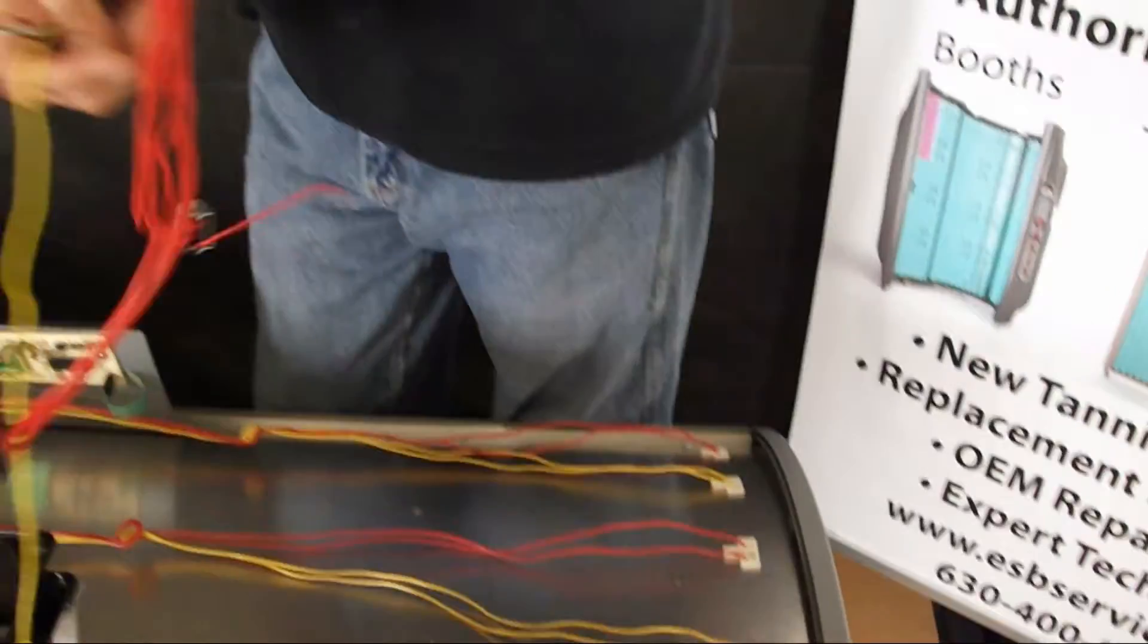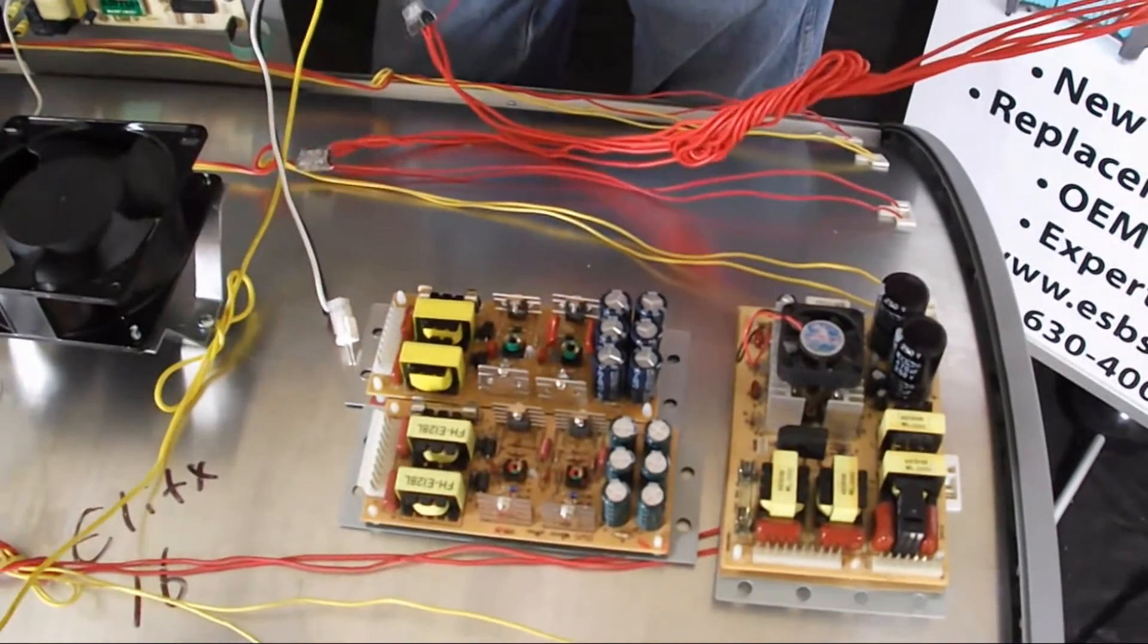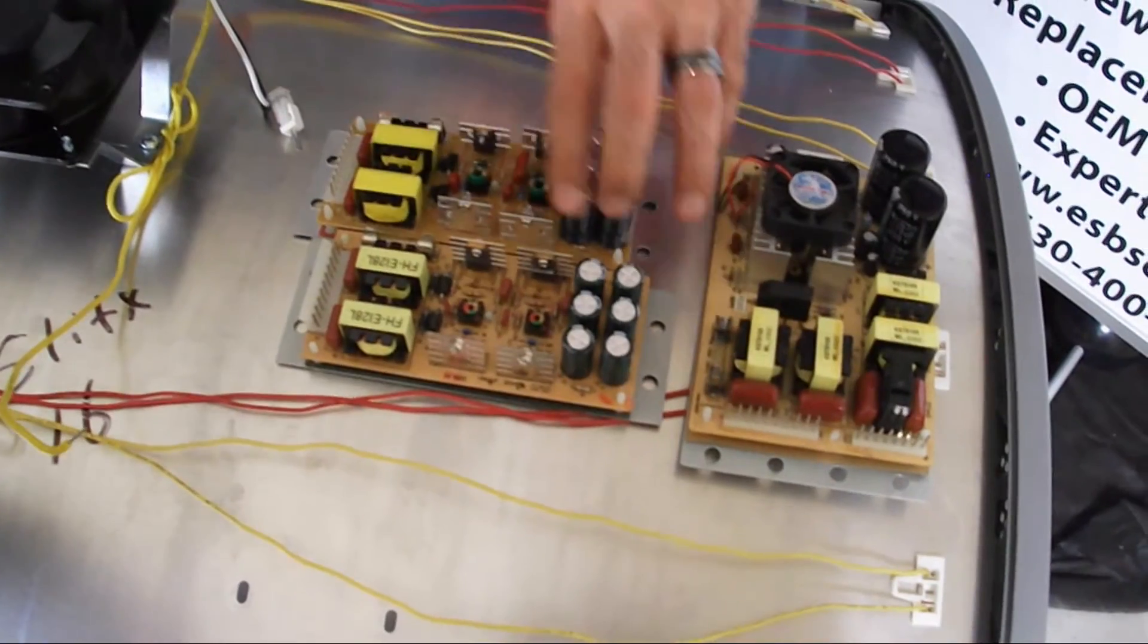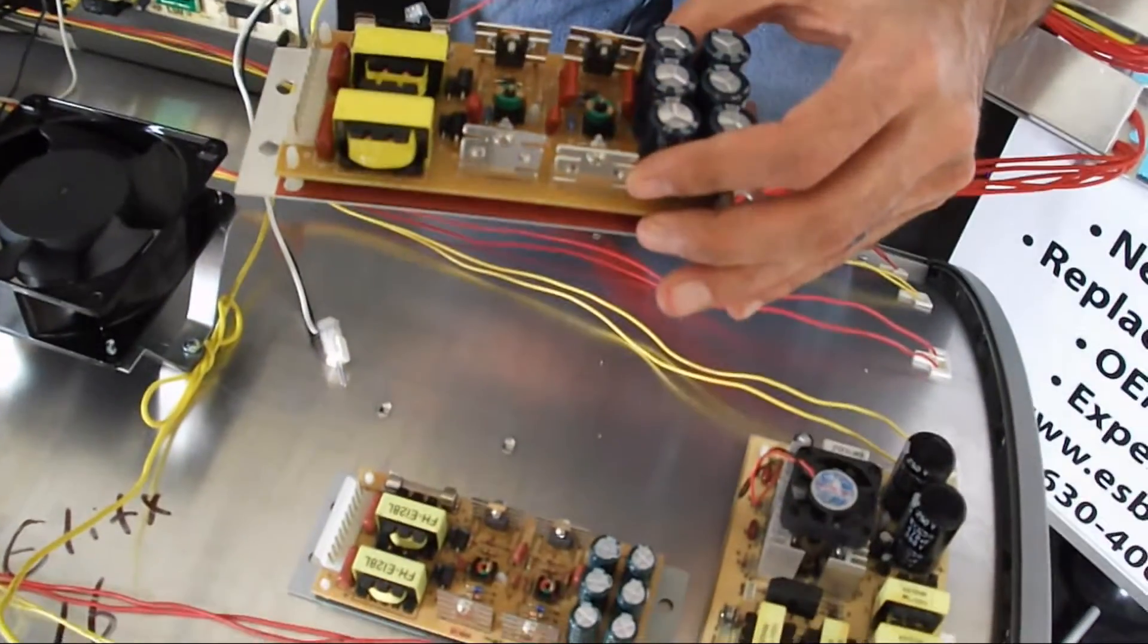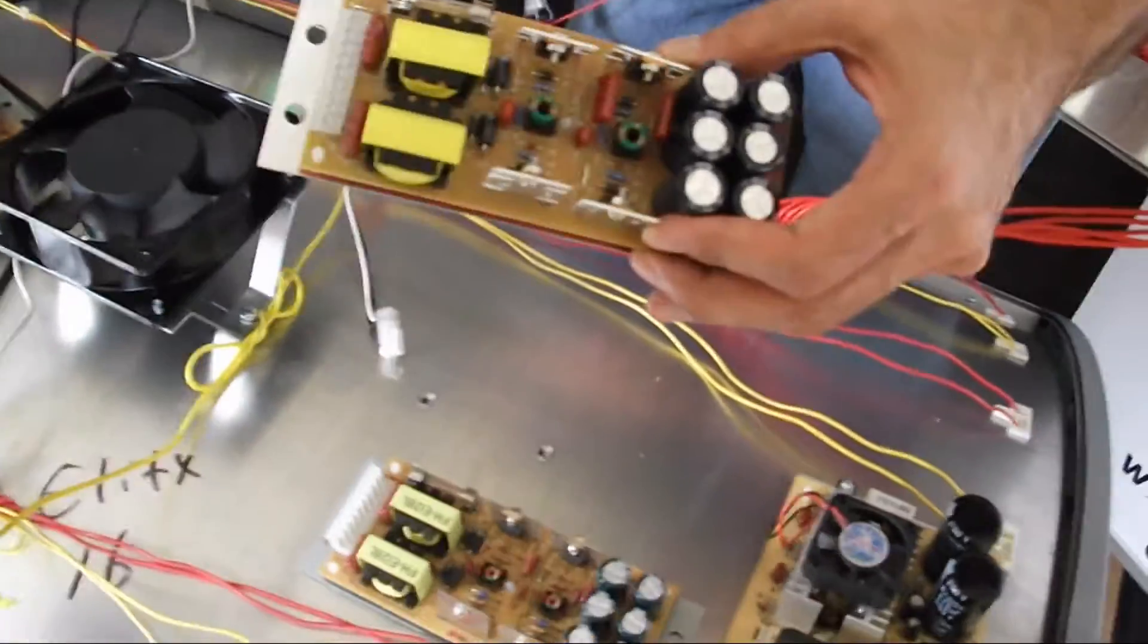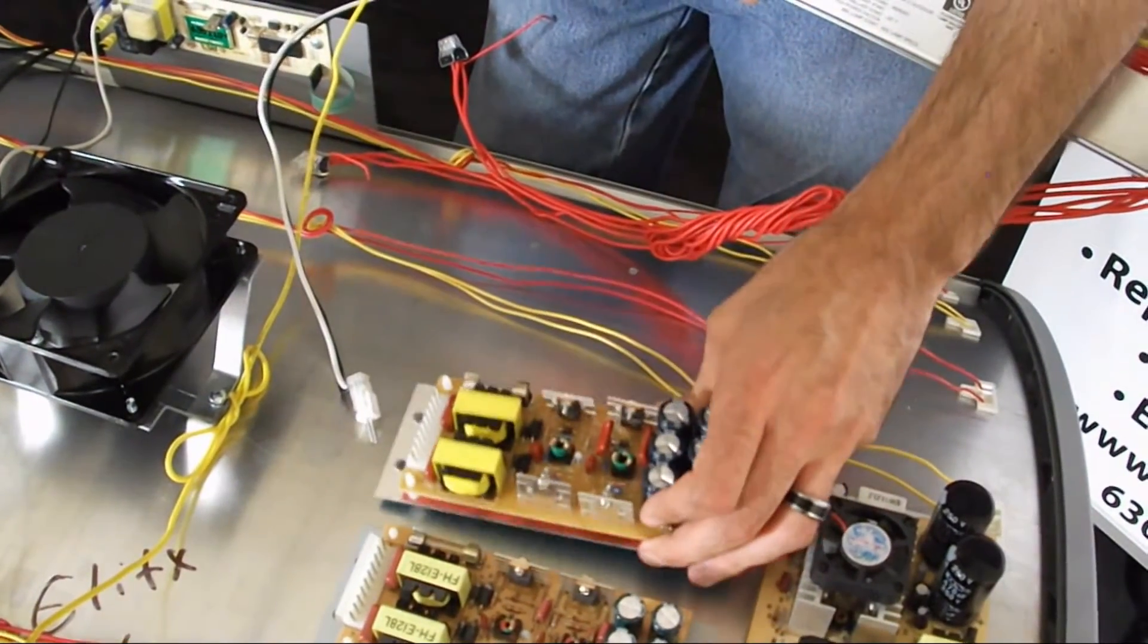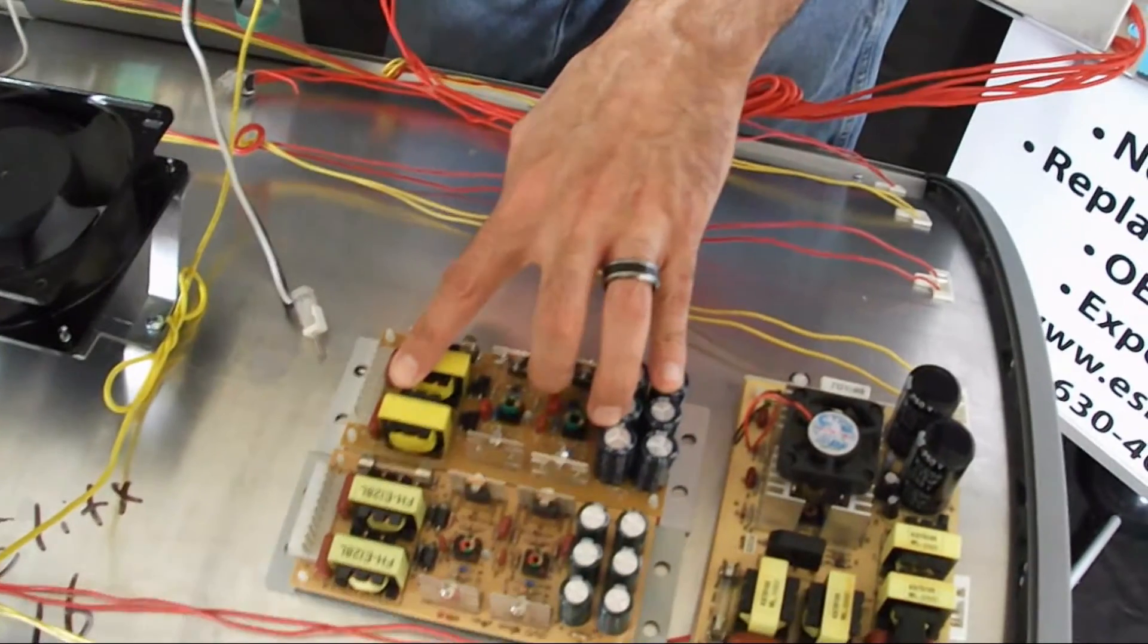As opposed to the 10-pin ballast, you can have several different issues, such as this ballast can be half-blown. Normally, this drives two lamps, but you can have it where only one lamp is lit, or, of course, if it's completely blown, you have where two lamps are not lit. This ballast here is sensitive to voltage swings.